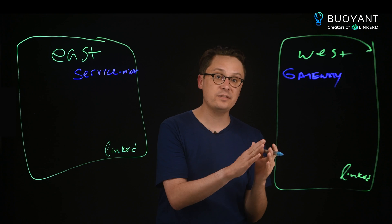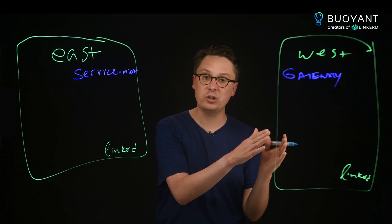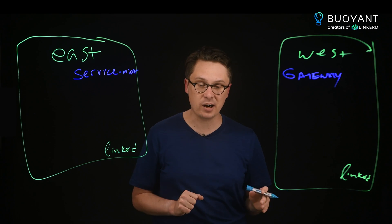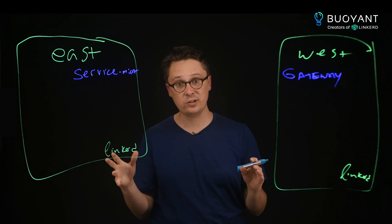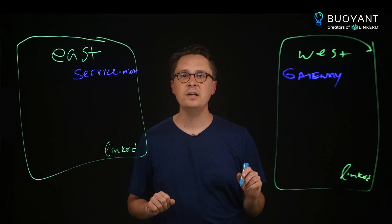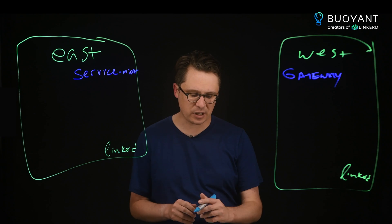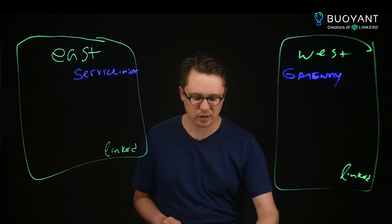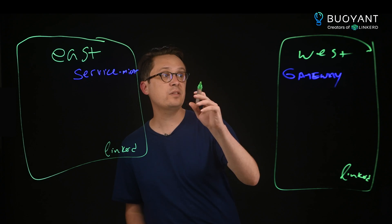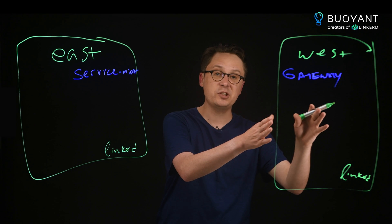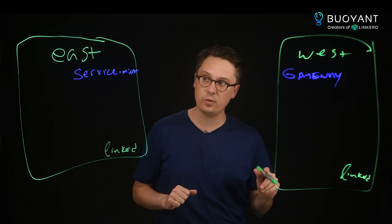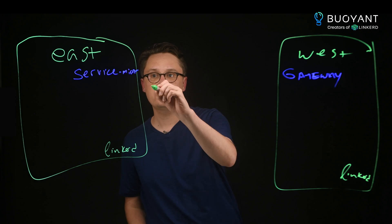The gateway only allows communication from other Linkerd proxies and other clusters that it trusts. The service mirror is configured with information about the cluster it's targeting — in this case, the West cluster.